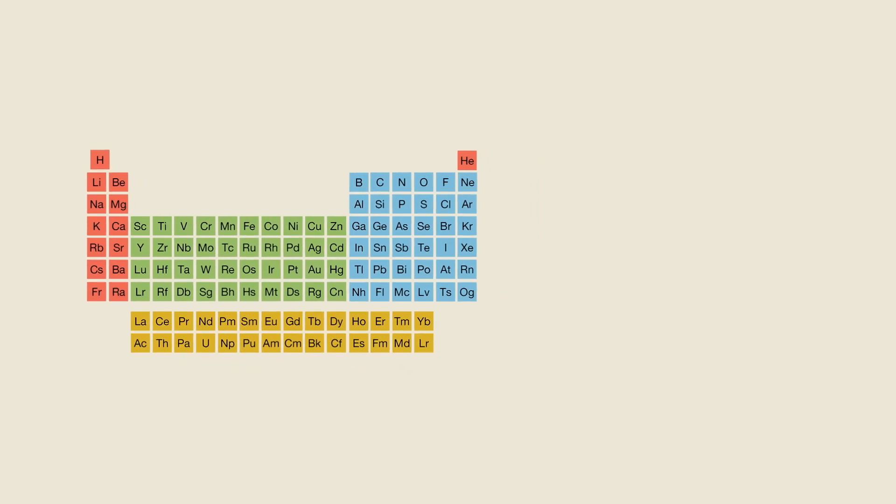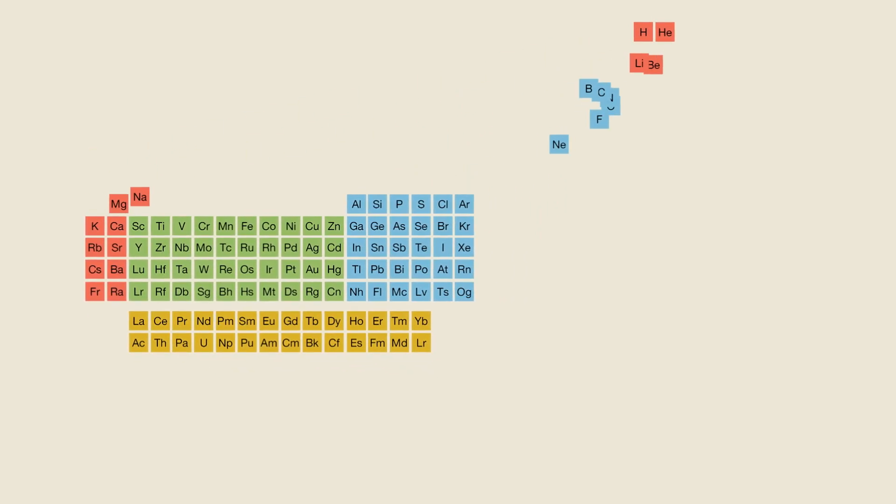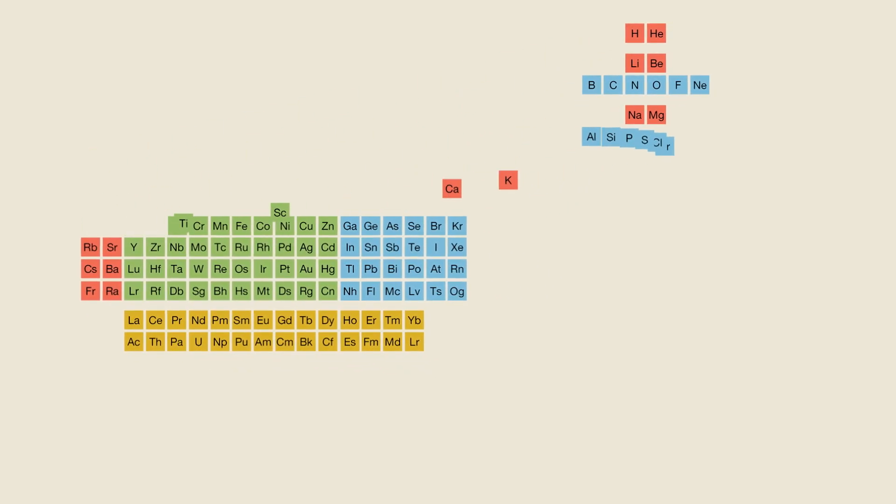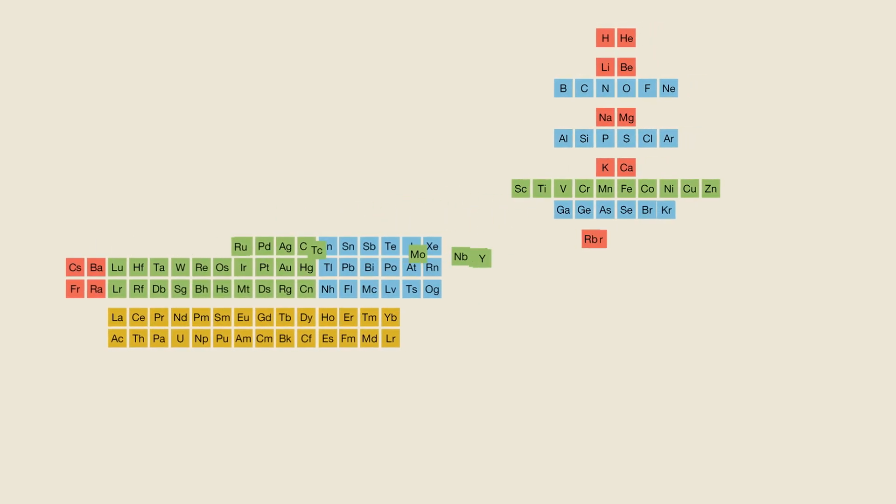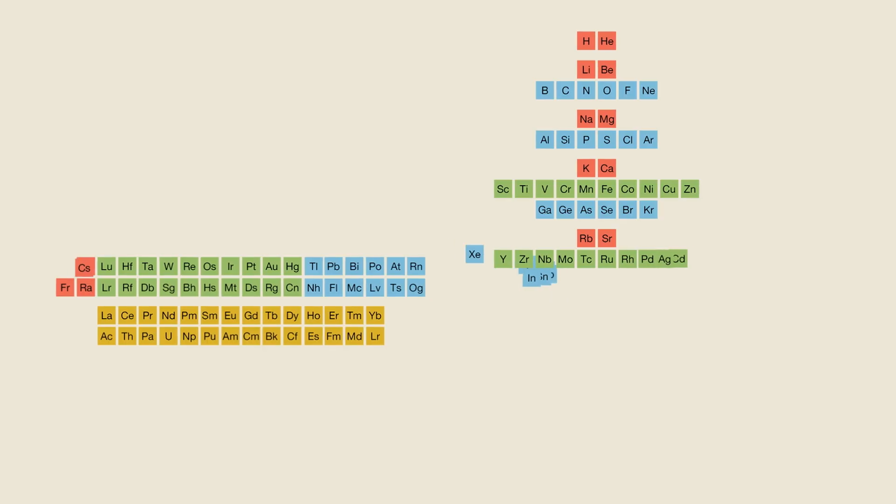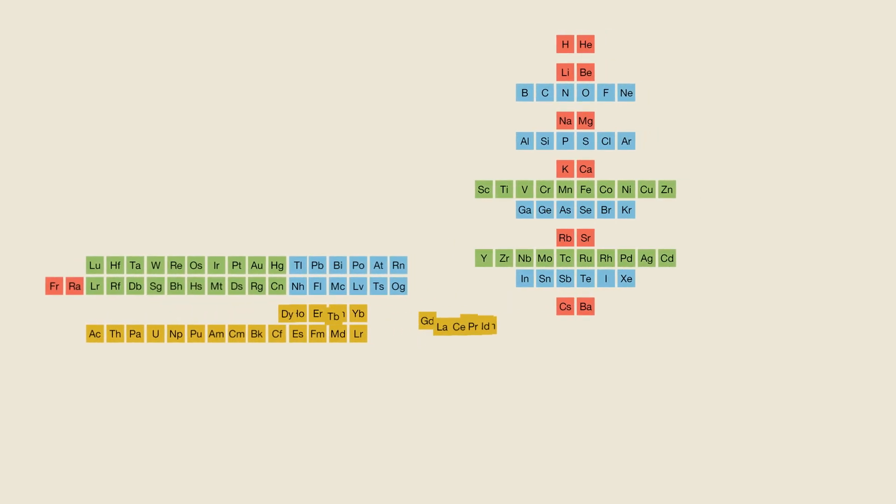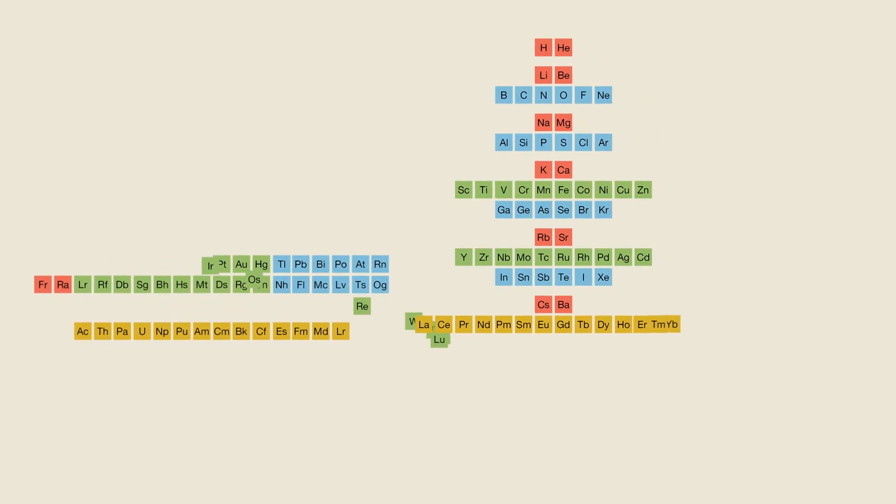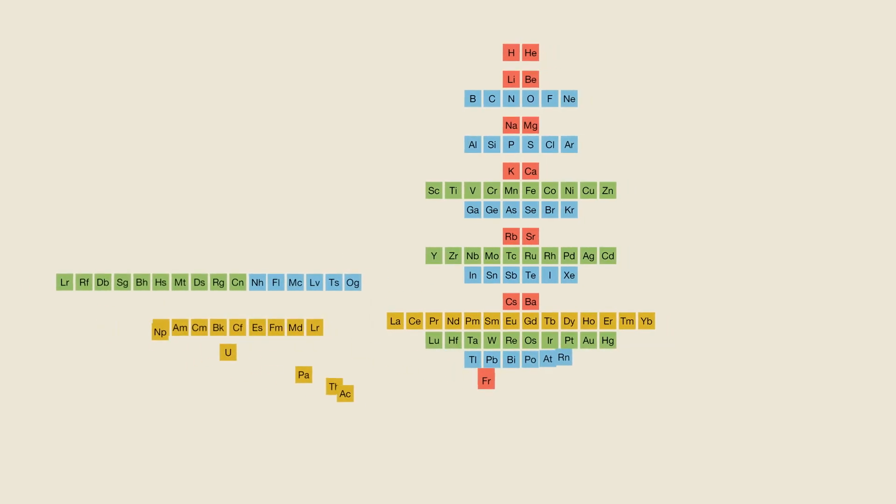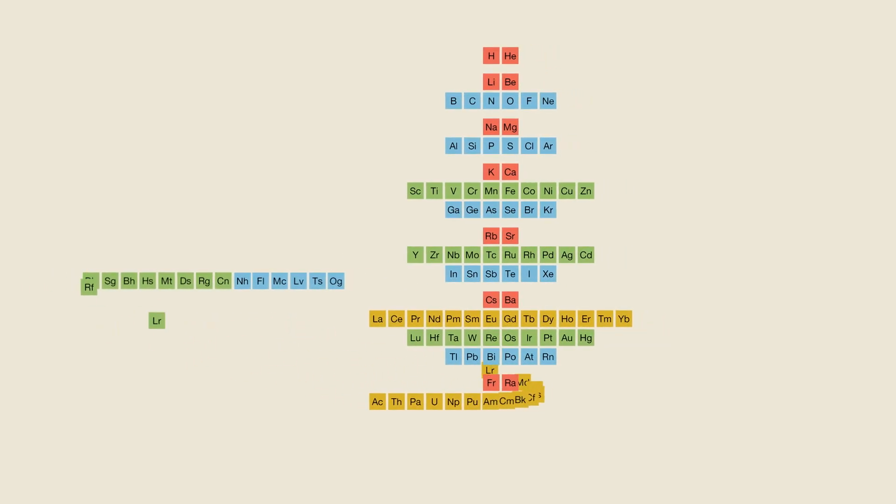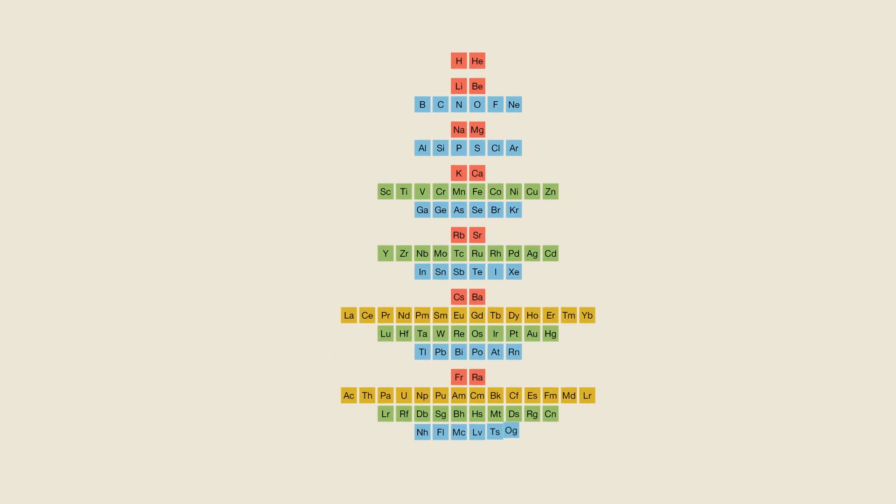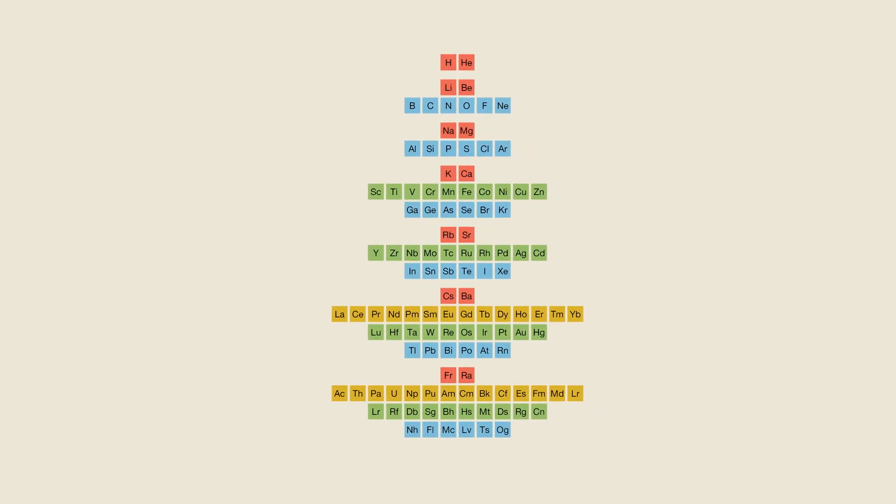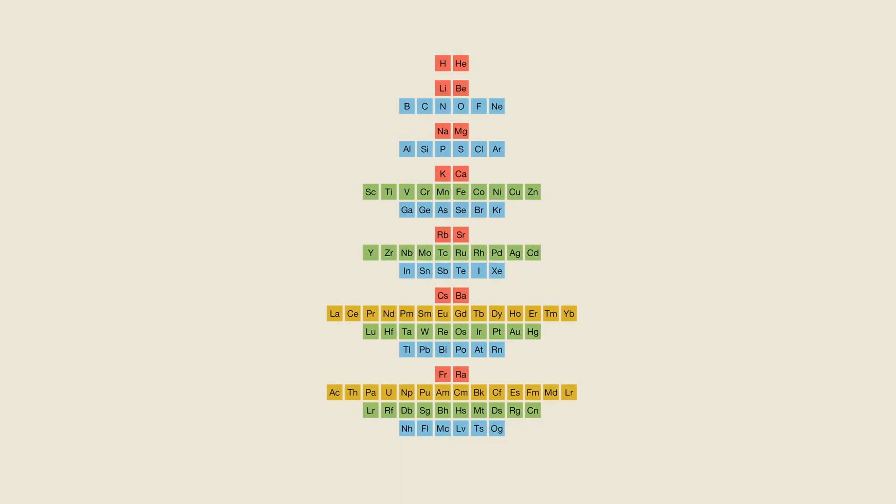But what if the periodic table was redesigned so that the electron pattern was more visibly noticeable? Well, that's what we've done with our alternative periodic table. Our table starts at the top and has a new line for each subshell. The result is a vertical format that both looks nice and clearly shows the pattern of how the various electron shells get filled in.